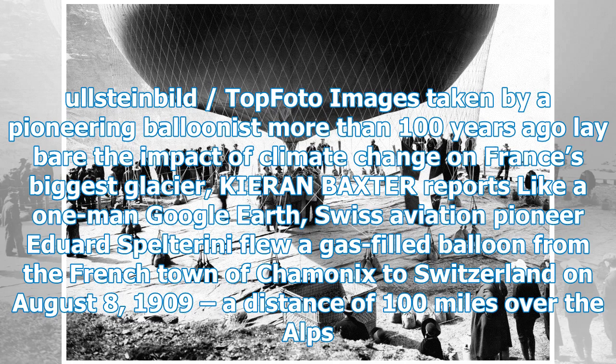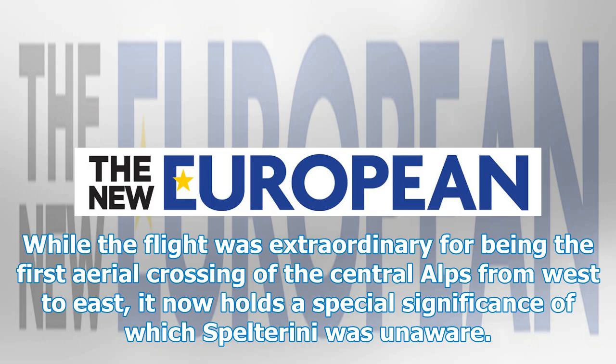Photos taken by a pioneering balloonist more than 100 years ago lay bare the impact of climate change on France's biggest glacier. Like a one-man Google Earth, Swiss aviation pioneer Eduard Spelterini flew a gas-filled balloon from the French town of Chamonix to Switzerland on August 8, 1909, a distance of 100 miles over the Alps. While the flight was extraordinary for being the first aerial crossing of the Central Alps from west to east, it now holds a special significance of which Spelterini was unaware.